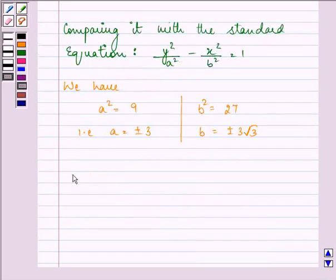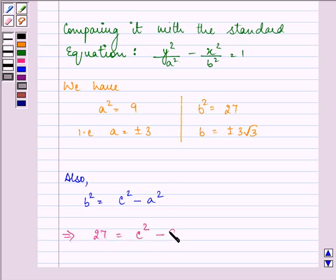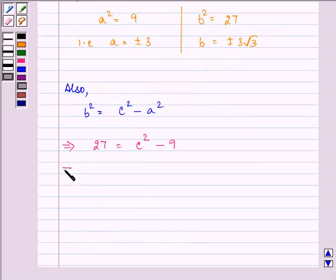Also, we know that b square is equal to c square minus a square. Now, we know b square and a square, we can easily find out c square. So, on substituting the values, we have b square as 27, c square is what we need to find out, minus a square. That further implies 36 is equal to c square. That further implies c is equal to plus minus 6.